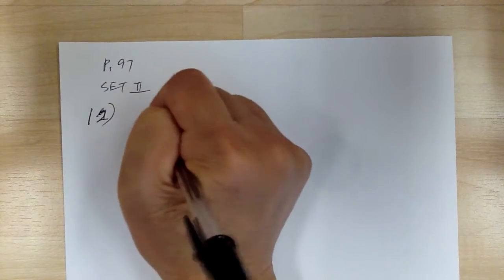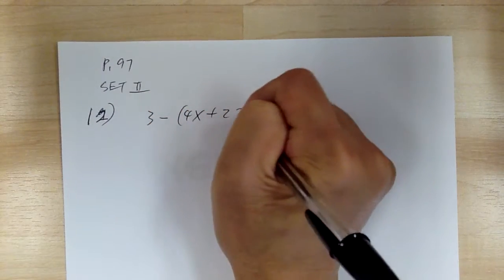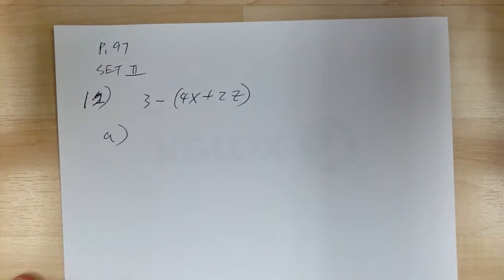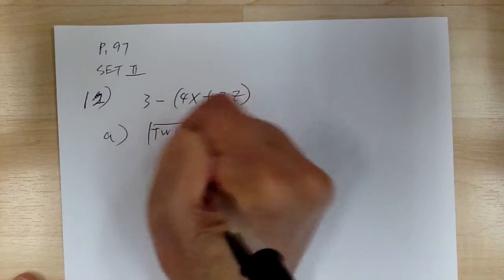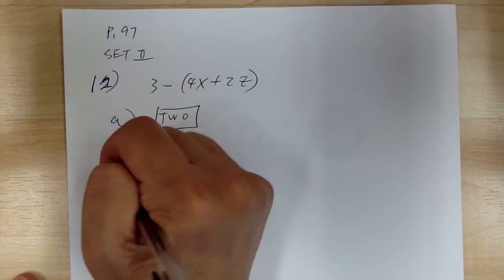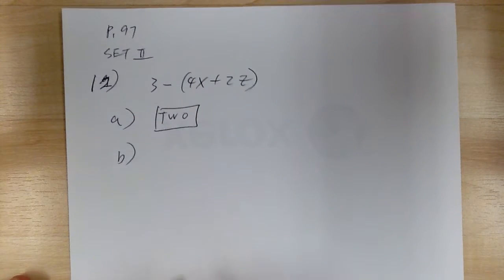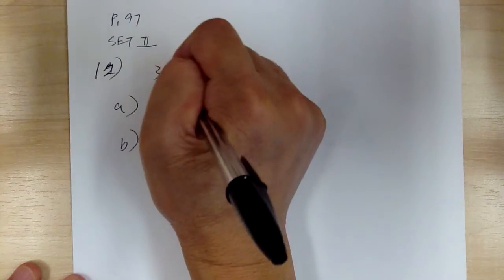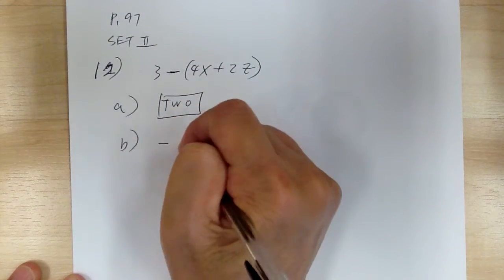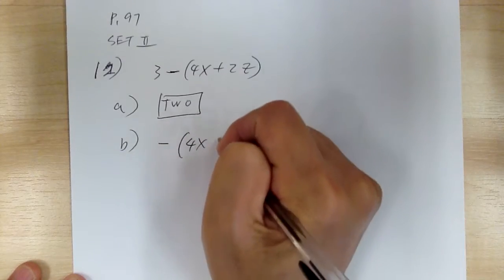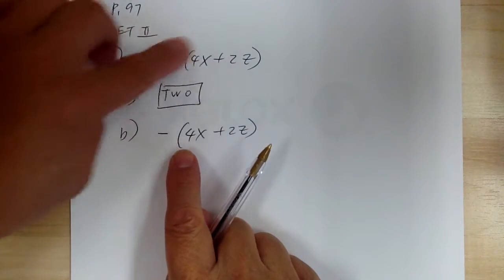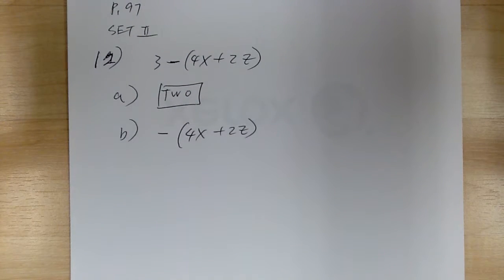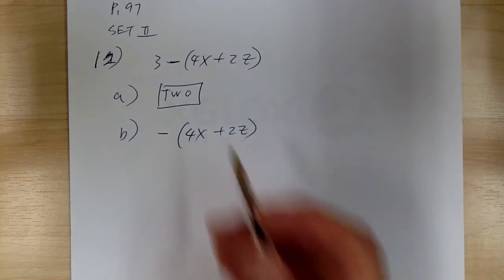Let's do number 12: 3 minus (4x plus 2z). Part a, determine the number of terms: there are two terms — term 1 is 3, and term 2 is the second part. Part b, write the second term: you include the sign, so the second term is negative(4x plus 2z). This whole thing is the second term. Addition or subtraction are the separators of terms.